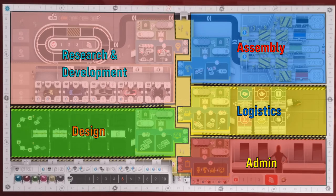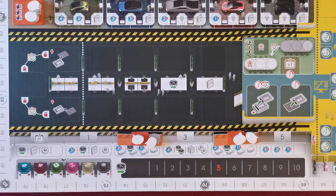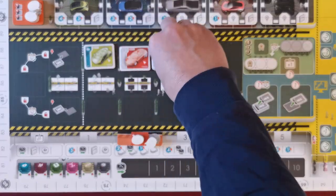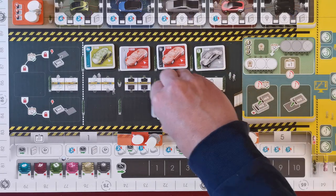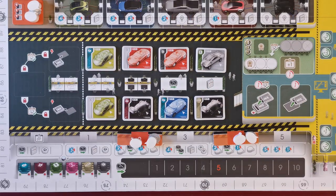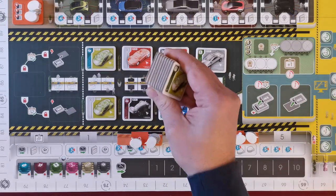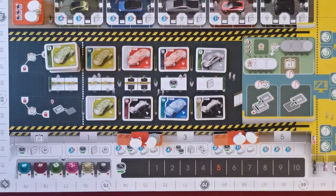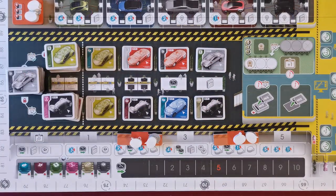Next, let's move to design setup. These are design tiles. After you shuffle them, place one face up in each of the eight spaces on the board. With the rest, create three stacks of nine tiles and place them in the indicated spaces, again face up.